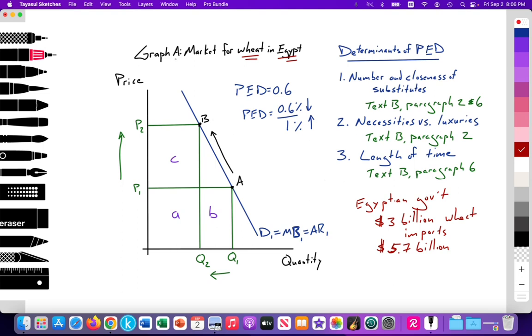So starting off, graph A, market for wheat in Egypt. On the x-axis, we're measuring quantity. On the y-axis, we're measuring price. We have a downward sloping demand curve equal to D1, equal to our marginal benefit, equal to our average revenue. We have a price set at P1, with a quantity demanded at Q1 at point A. And due to the Russian-Ukrainian war and the reduction of wheat being exported from Ukraine and Russia, the global supply has decreased, leading to a rise in the price for wheat, which impacts Egypt. Prices increased from P1 to P2 and led to a decrease from Q1 to Q2.